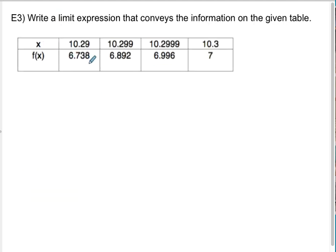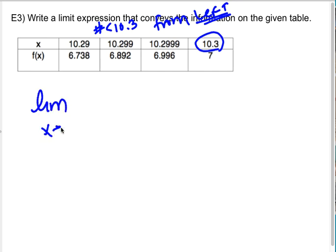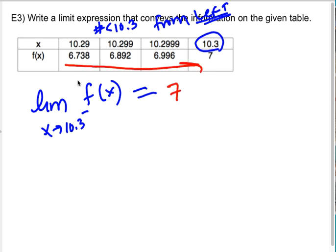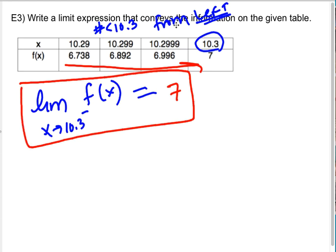So we're going to write a limit expression that conveys the information that's on the table. So first thing I notice is when I look at my x values, this is the x value they're getting closer and closer to. And these numbers are smaller than 10.3. So that must mean from the left. Even if it were written on the table in the reverse order just to mess with you, the numbers are smaller than 10.3, so they're from the left. So it seems to me that this is the limit as x approaches 10.3 from the left of f(x), and that that limit, as I approach, if I then look at what value it approaches, it seems to be approaching 7. So that's my limit based on the table. So it's the opposite order. I'm working in reverse. Given a table, what does this say about the function?